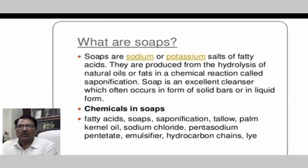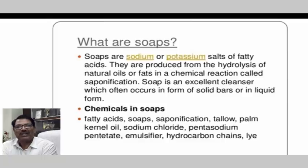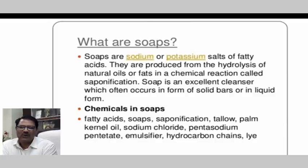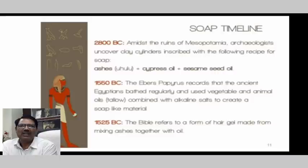What are soaps? Nowadays when you watch TV, previously there was a 10-minute break, but now there is a 20-second break because 20 seconds are required for washing hands. Soaps are sodium or potassium salts of fatty acids. They are produced from hydrolysis of natural oils or fats through a chemical reaction called saponification. Soap is an excellent cleaner which often occurs in the form of solid bars. Various chemicals are present in soap: fatty acids, tallow, palm oil, and other additives. There is also a long history — soaps have been used for over 2,800 years before Christ.